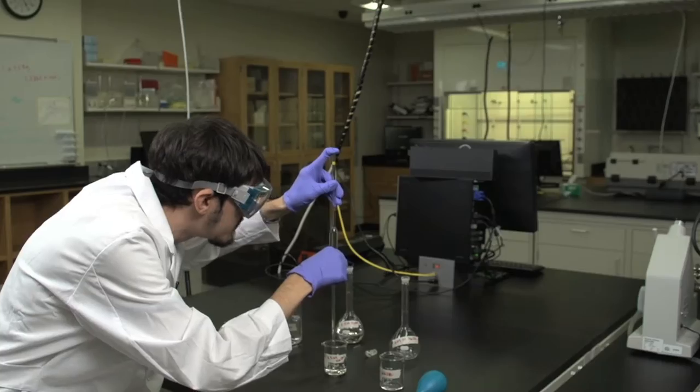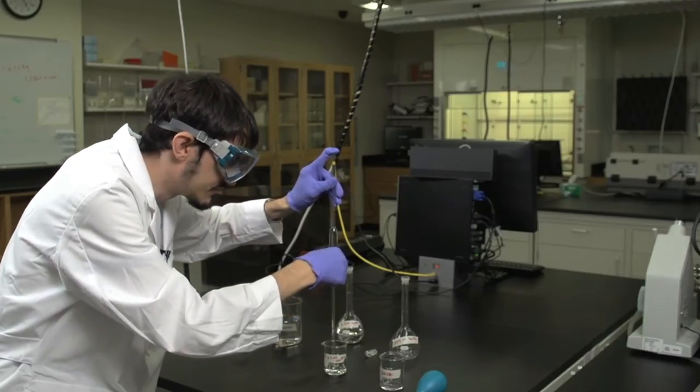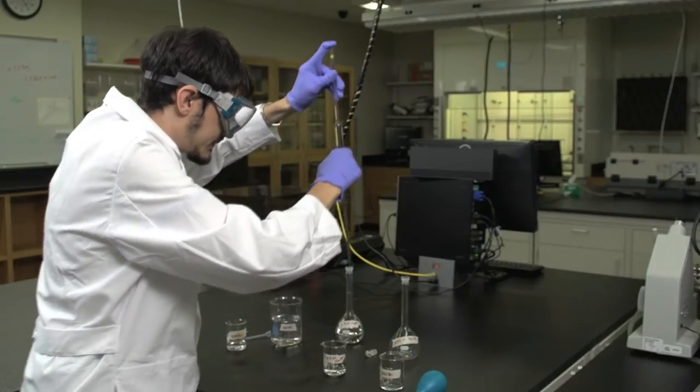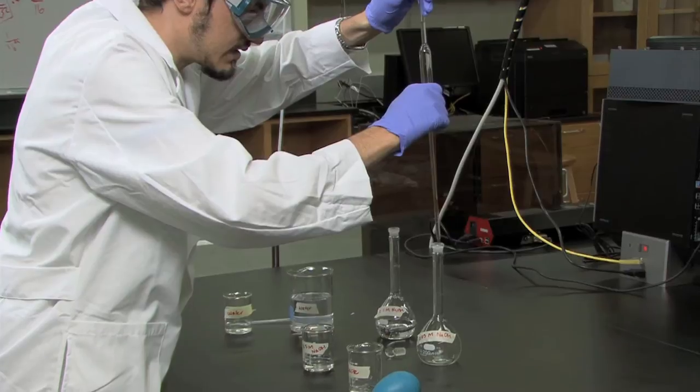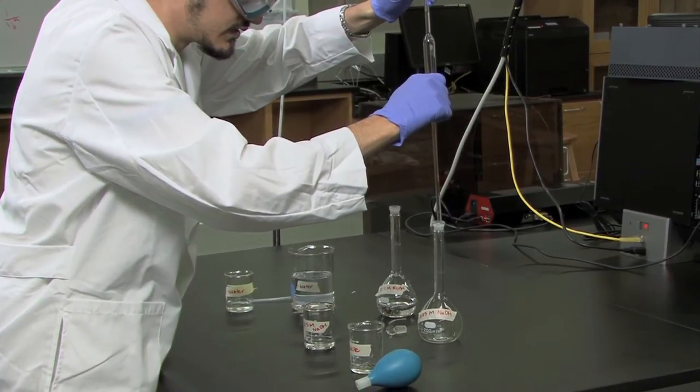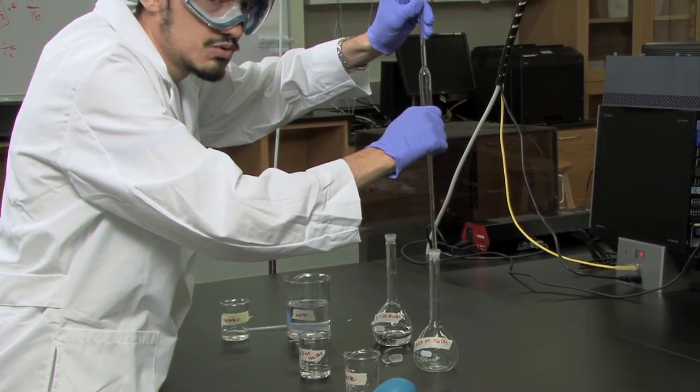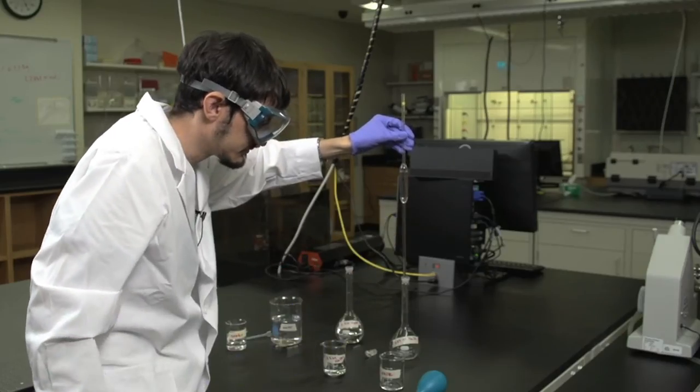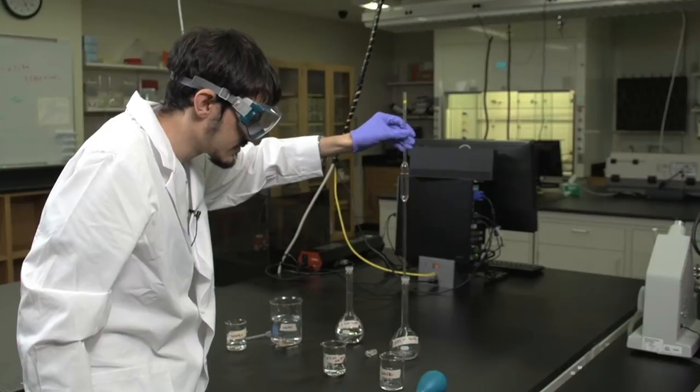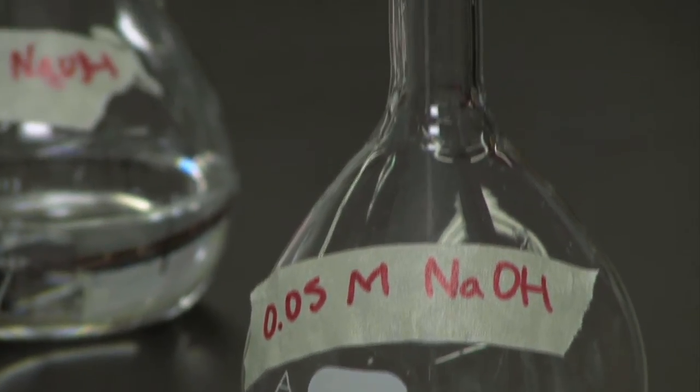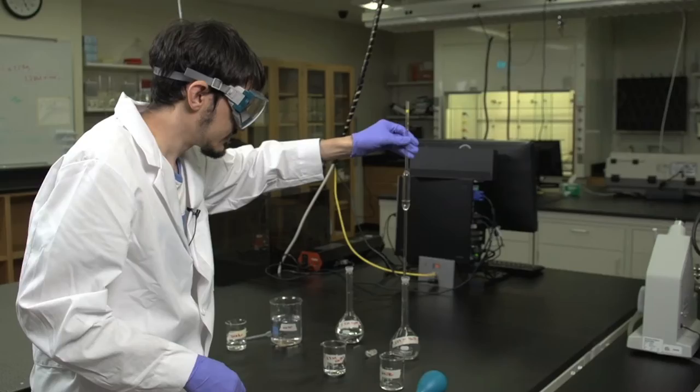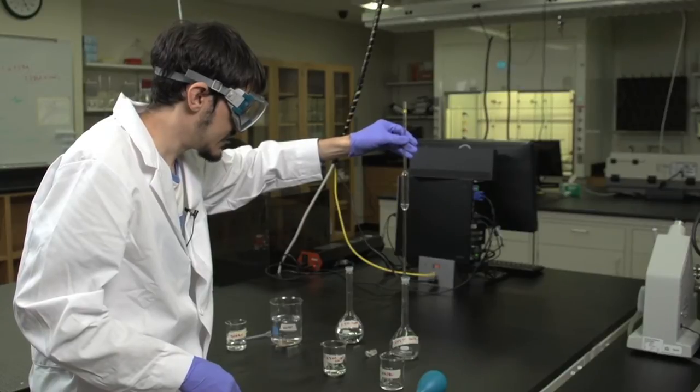Once you are at that point, place your finger firmly above it so that the solution does not fall anymore, and carefully take the pipette, placing it over the volumetric flask in which you will make the solution, and release. It's important to remember not to blow out the remainder in this step.